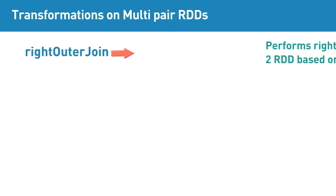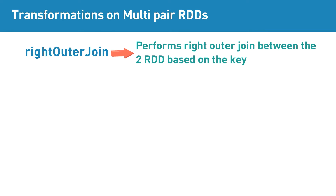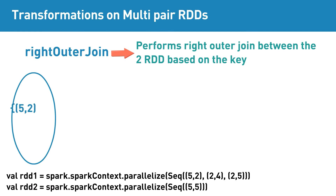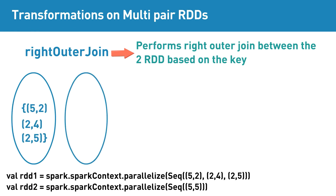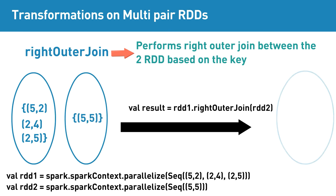Right outer join is a multi-pair RDD transformation that does a right outer join between the two RDDs based on the key. As you know, right outer join returns all the elements of the right dataset and returns only the matching elements from the left dataset. For example, if input RDD1 contains elements 5-2, 2-4, 2-5, and input RDD2 contains 5-5, then applying right outer join transformation will return elements as highlighted.